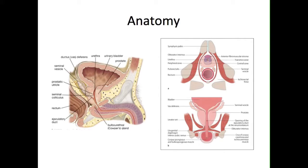The main function of the prostate gland is to secrete an alkaline prostatic fluid that forms approximately 20-30% of seminal fluid. These secretions are needed to ensure normal sperm function and fertility.